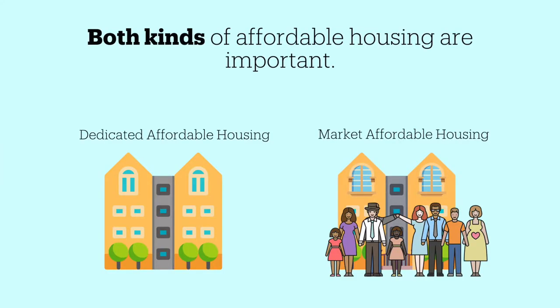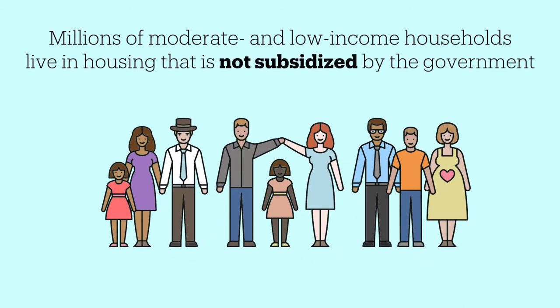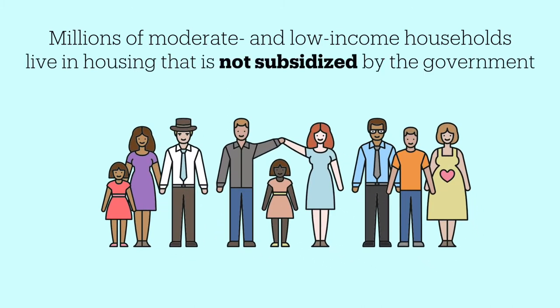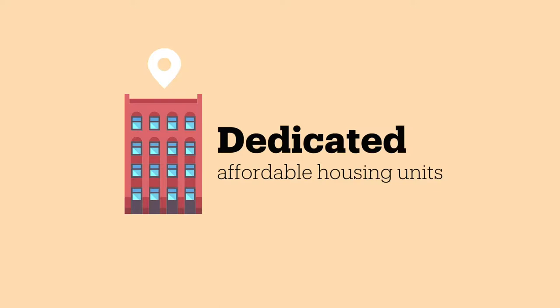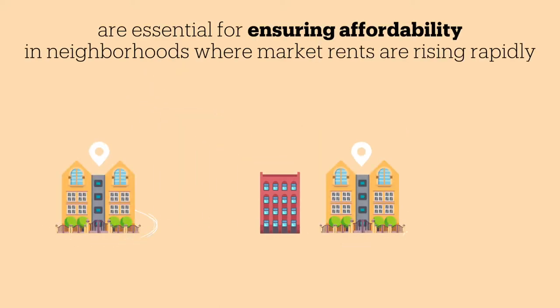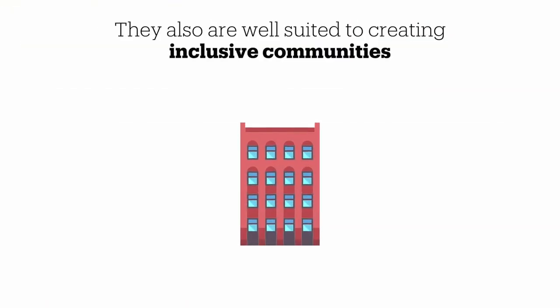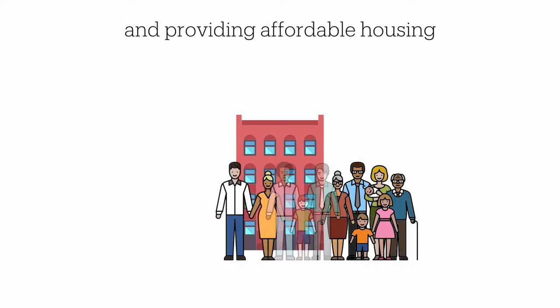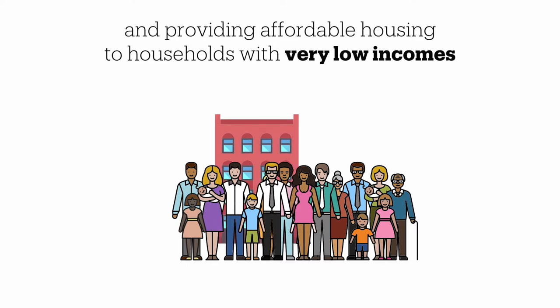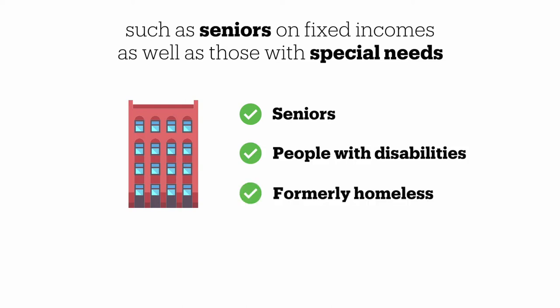Both kinds of affordable housing are important. Millions of moderate and low-income households live in housing that is not subsidized by the government but is affordable to them. Dedicated affordable housing units, on the other hand, are essential for ensuring affordability in neighborhoods where market rents are rising rapidly. They also are well-suited to creating inclusive communities and providing affordable housing to households with very low incomes, such as seniors on fixed incomes, as well as those with special needs such as people with mental disabilities and formerly homeless individuals.